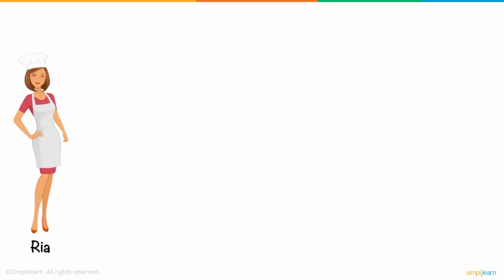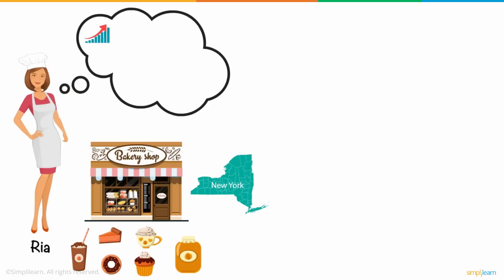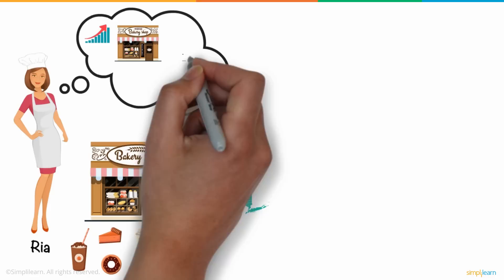Ria is a phenomenal baker who runs a bakery in New York. On seeing the great success of her business, she thought of growing it even bigger and launching a new franchise of her bakery in LA.